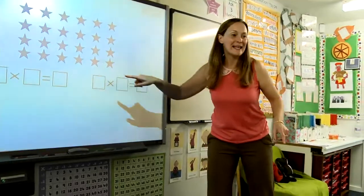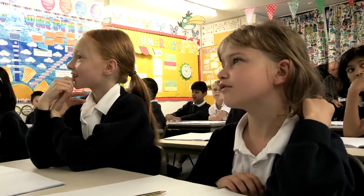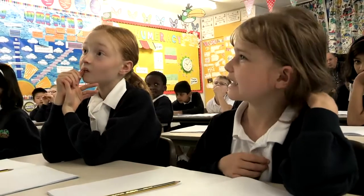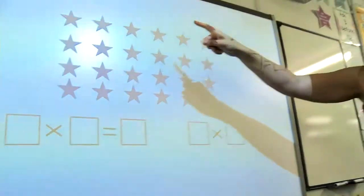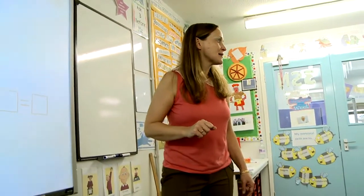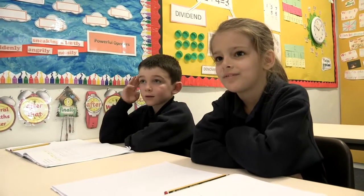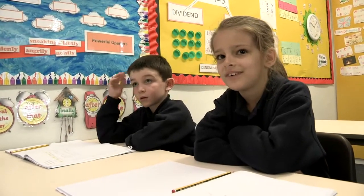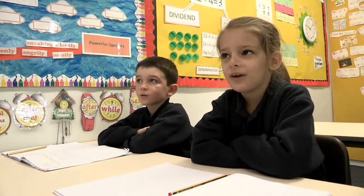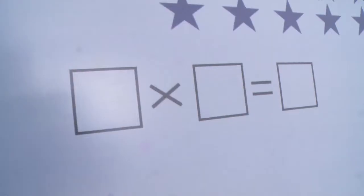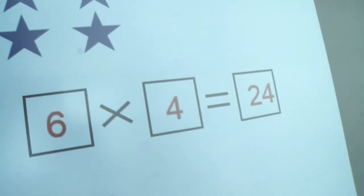Emily, tell me what you can see. Four groups of six. Good girl. You can see four groups of six stars. Kira, can you tell me the multiplication sentence for four groups of six stars? Six times four equals 24, or four times six equals 24. We've got four times six equals 24 and six times four equals 24.